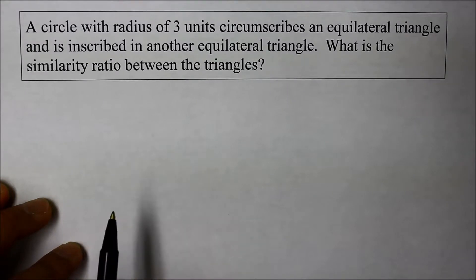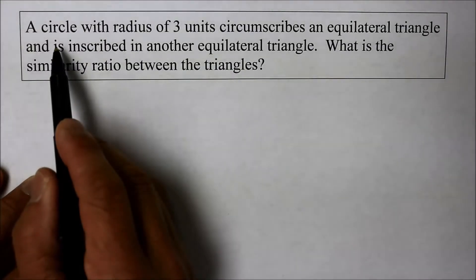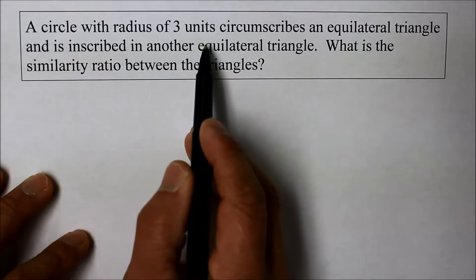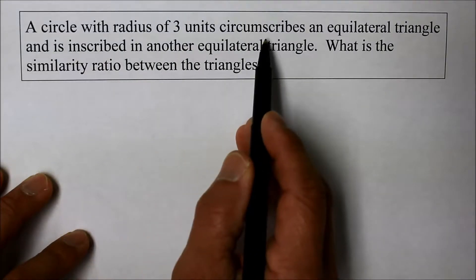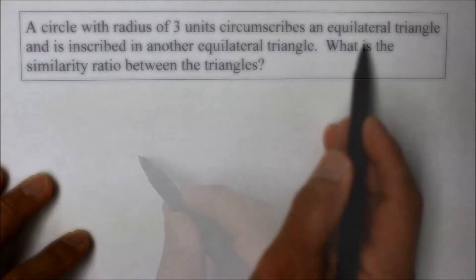Why don't you read it and pause and see if you can figure this out. Go ahead. All right, so here's what we have. I'm going to just sketch it out. A circle with a radius of three units circumscribes, so it goes around another object which is an equilateral triangle.